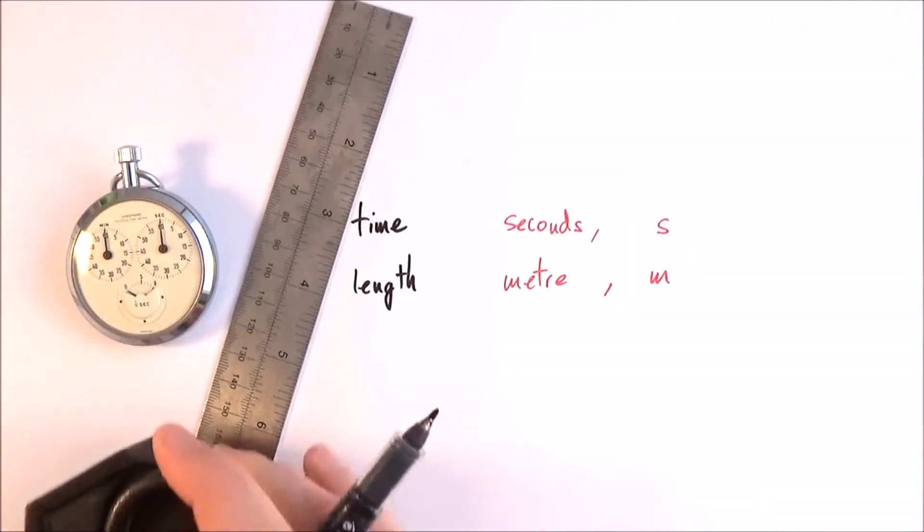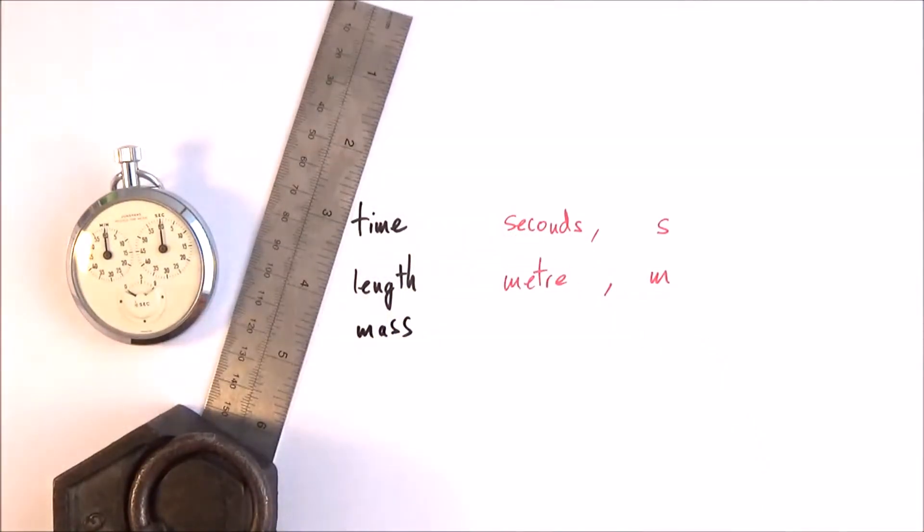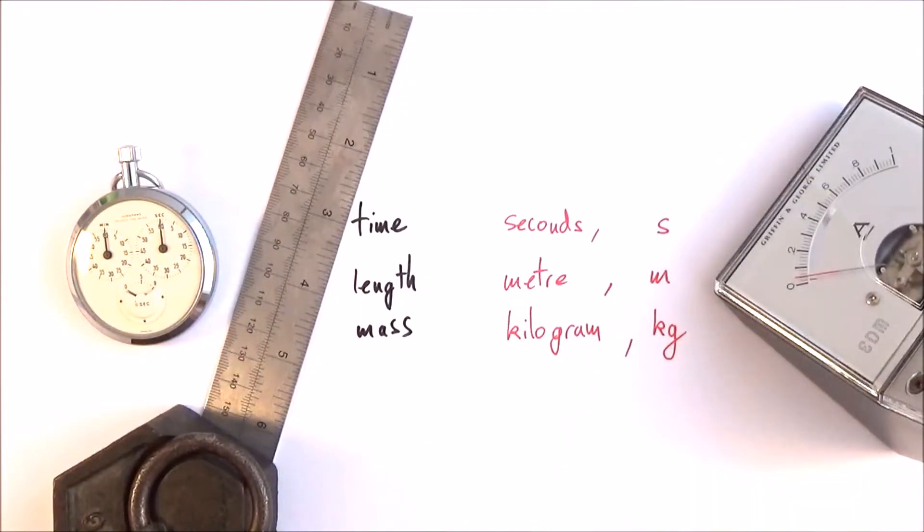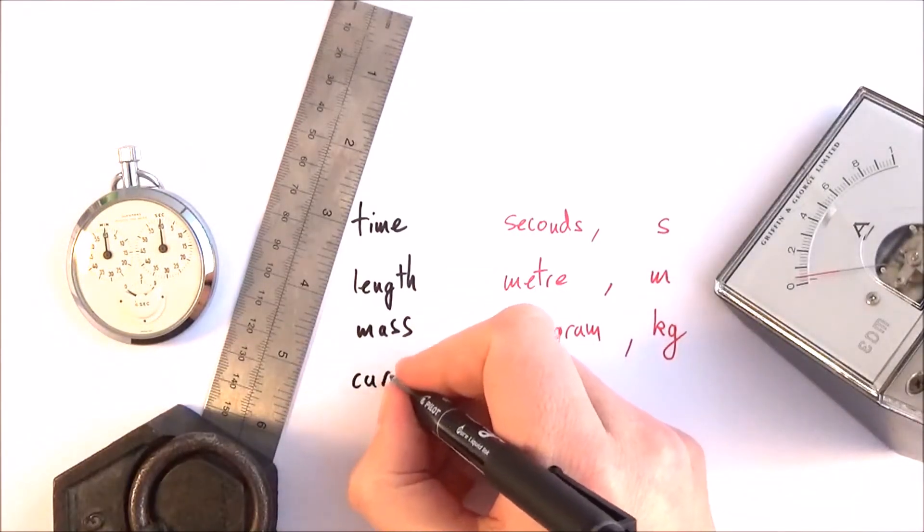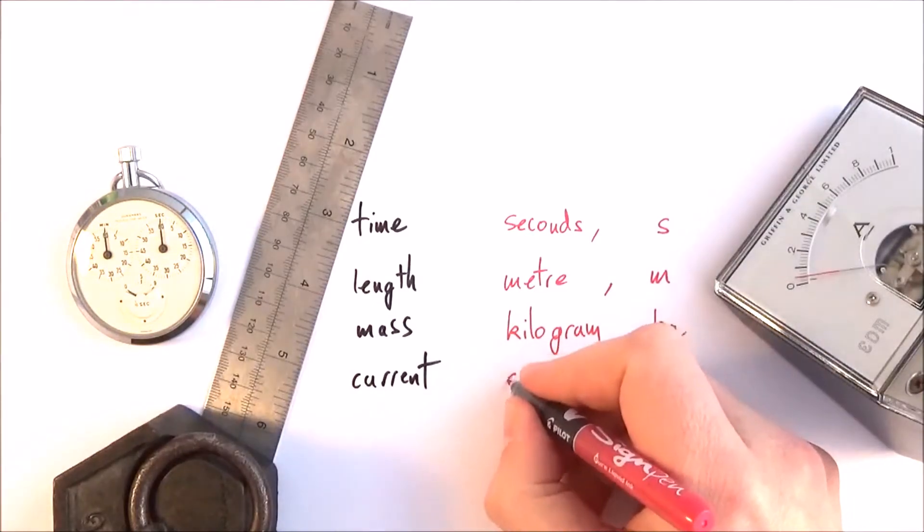Mass is measured in kilograms. Electric current, perhaps flowing in a circuit, is measured in amps or the ampere.